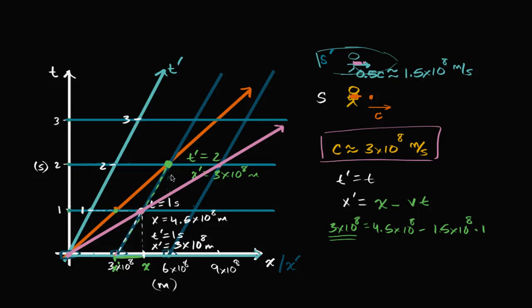In the last videos, we constructed a little bit of a conundrum. We had this situation where I'm drifting through space, and right at time equals zero, one of my friends passes me by in a spaceship going half the speed of light in the positive x direction relative to me, and at time equals zero is exactly where she is at my position. The conundrum we hit was that the speed of light would be perceived differently based on which frame of reference you're in.